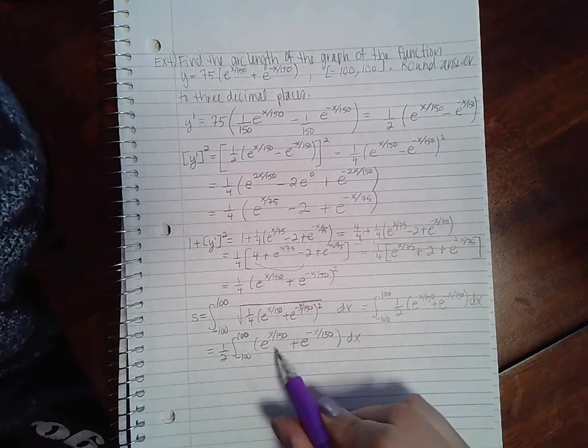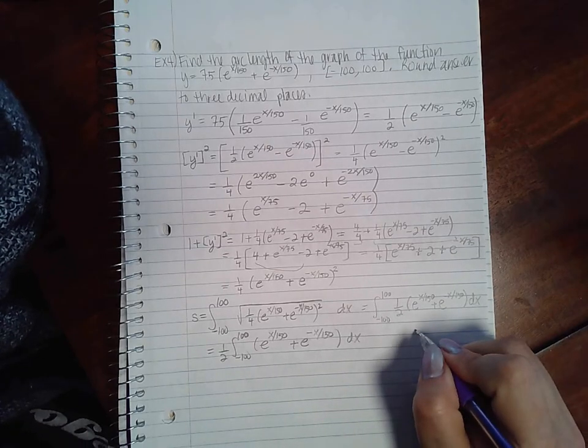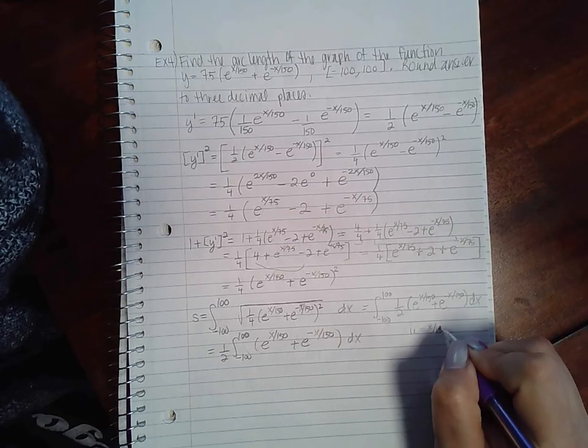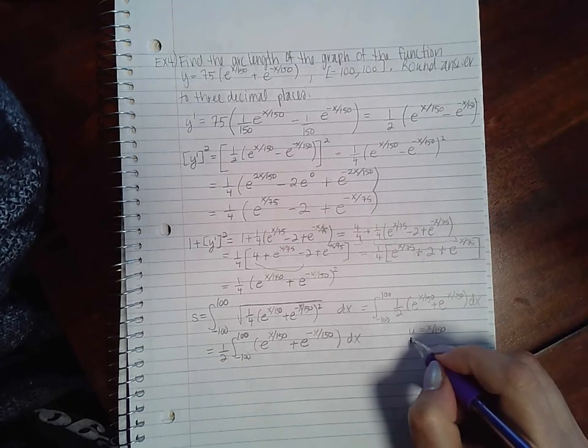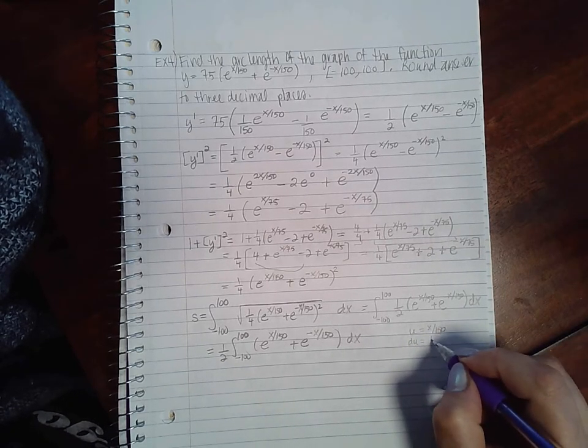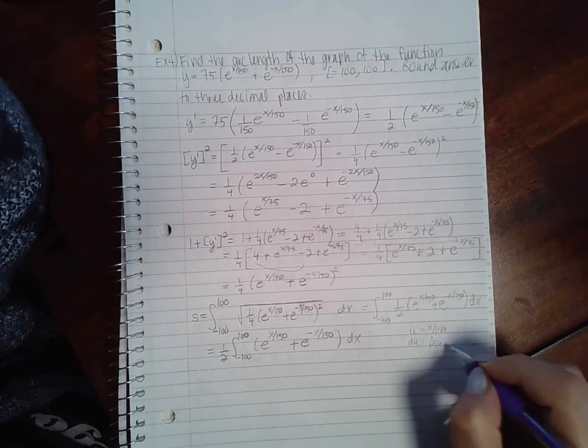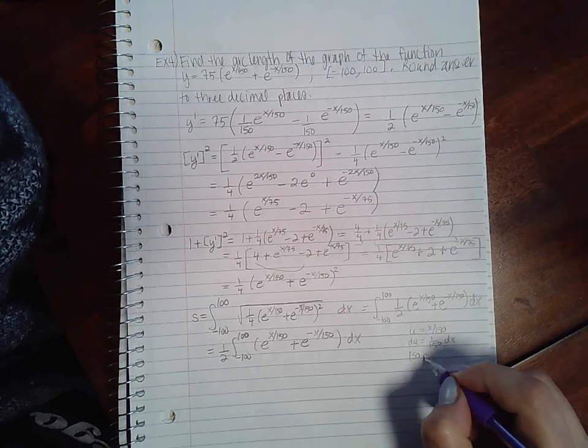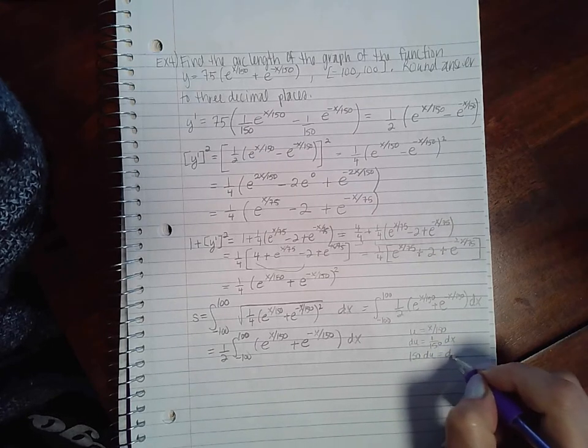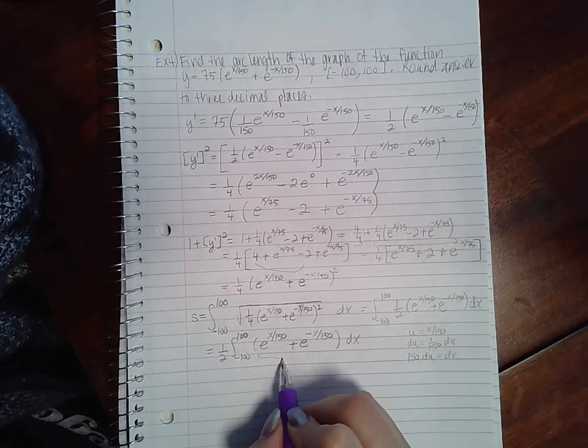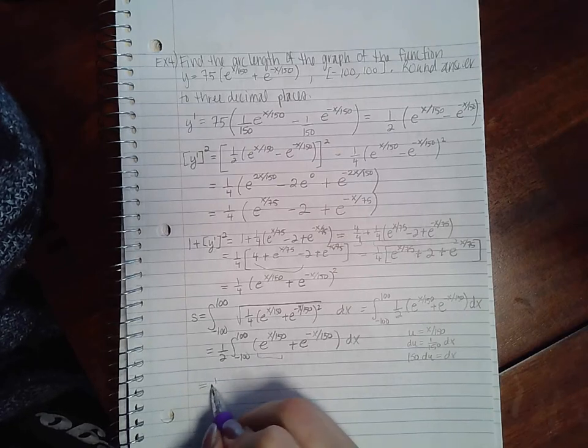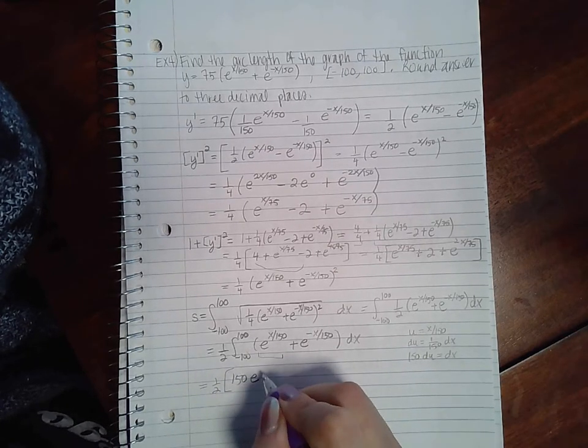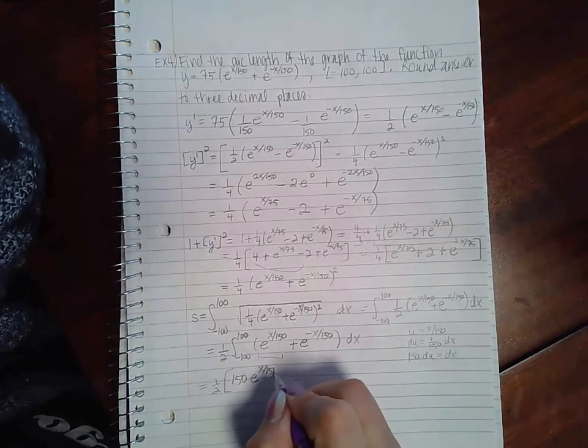So if you use u substitution for each one of them. If I have u equal to x over 150, then du will equal 1 over 150 dx, which means 150 du will equal dx. So this one here will integrate into 150 e to the u, which is x over 150.